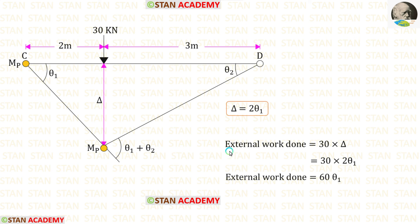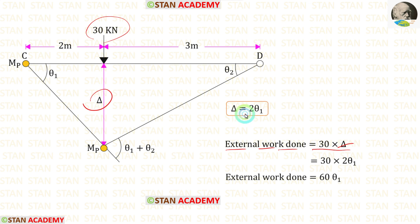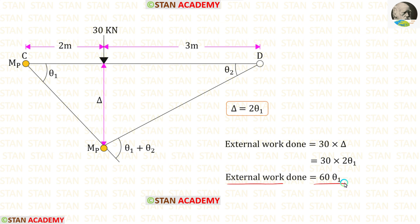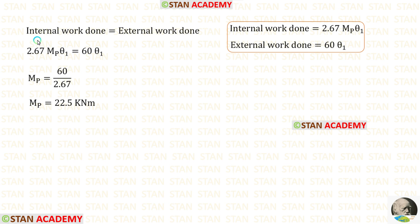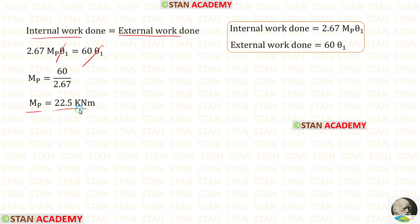Now let us find the external work done. We multiply the load 30 kN with the virtual displacement delta. Substituting delta = 2 theta 1, the external work done is 60 theta 1. Equating internal and external work done and eliminating theta 1, we get MB = 22.5 kNm.